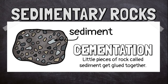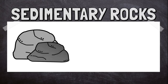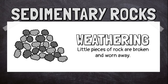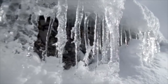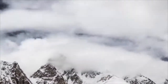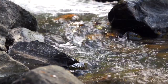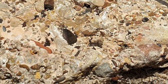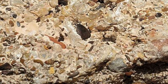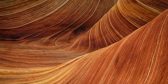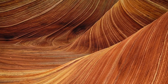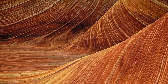As time goes by, little bits of rock are broken and worn away in a process called weathering. This can happen because of wind, ice, or moving water. In a sedimentary rock, you can usually see the different pieces of rock or even whole layers of different types of rock, like stripes.